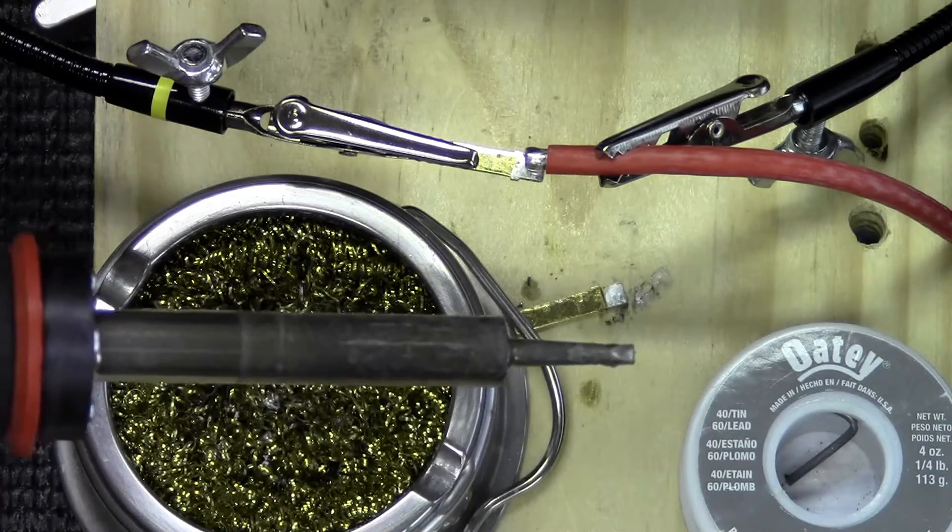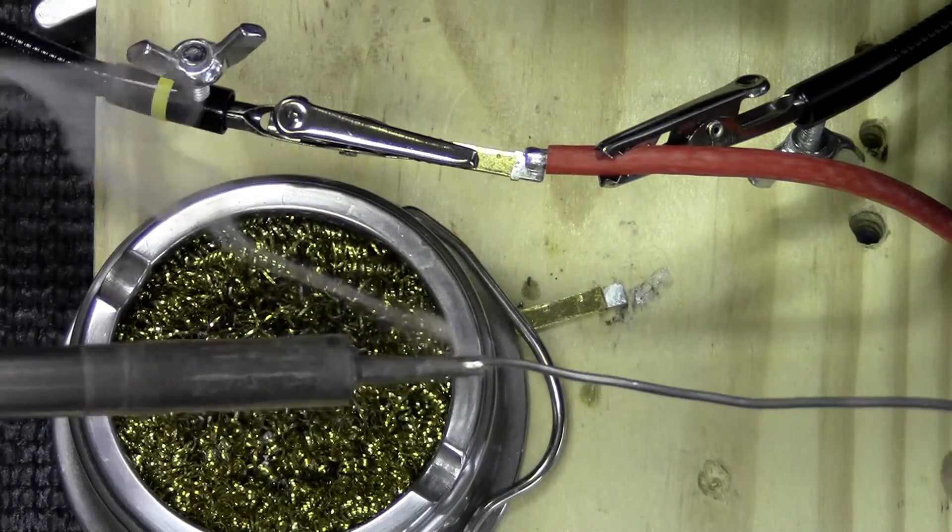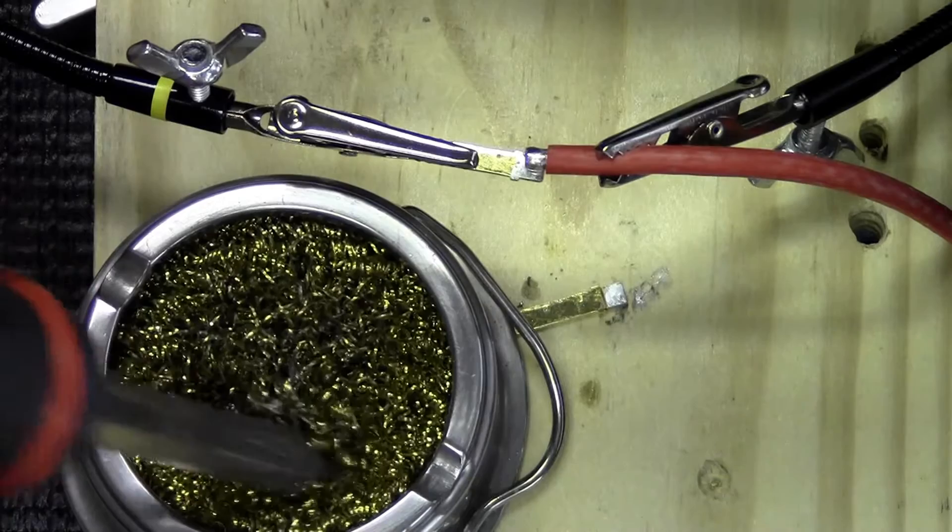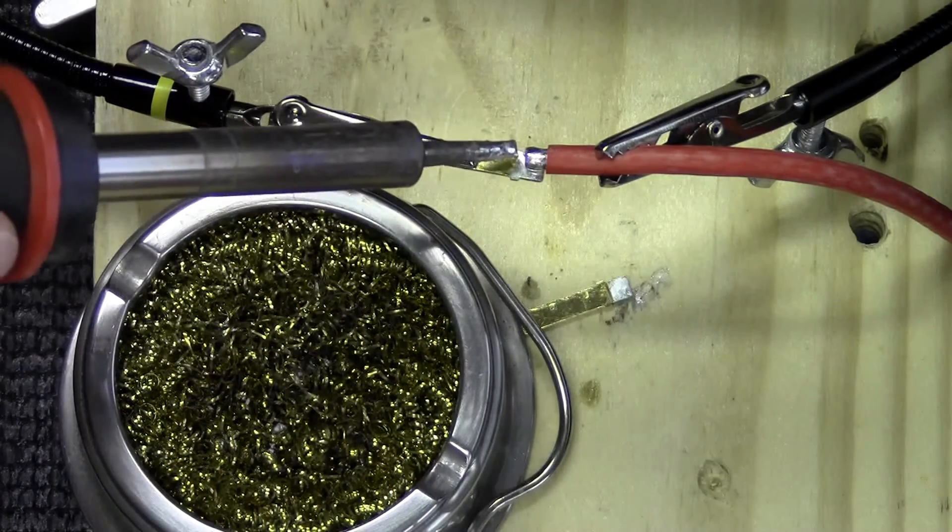So our solder is already warmed up here. What we're going to do is just touch a little bit of solder onto it just to tin the tip so it heats up nice and quick. Get the extra solder off of there.